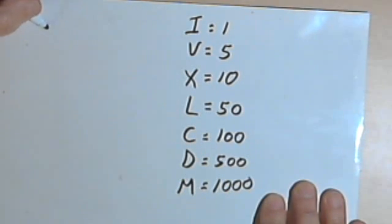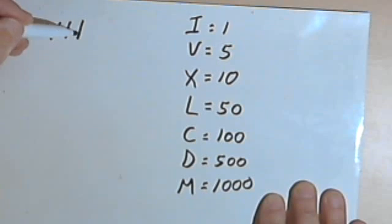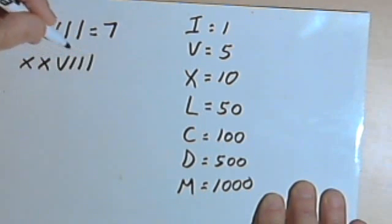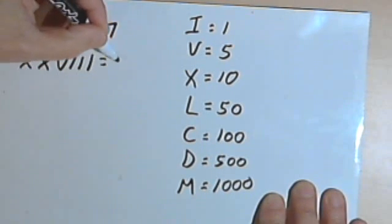So if we saw the Roman numerals VII, we would read that as the V, which equals 5, plus two I's, each I is 1, so VII would equal 7. If we saw XXVIII, then the X's stand for tens, so that's 20. The V is 5, so we've got 25, and three more because of the three I's would be 28.